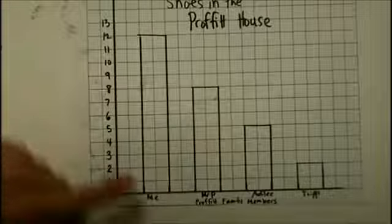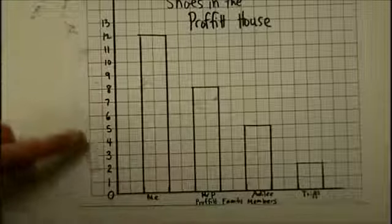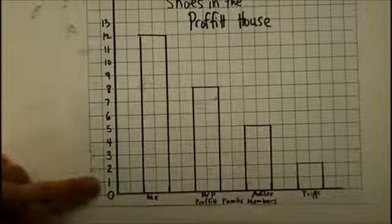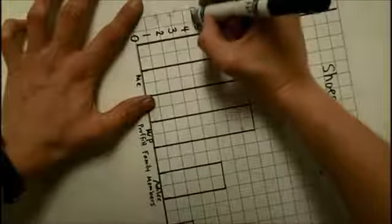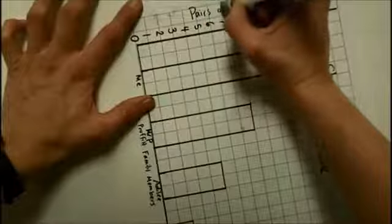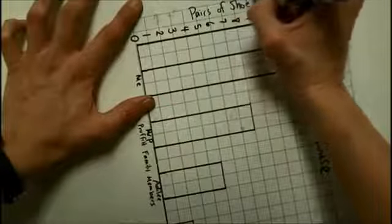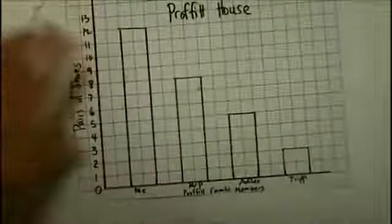And then, I need to make a y-axis scale. I should have saved more room down here, as you can see. Now, I'm going to make a y-axis scale that says what we are counting. Well, we're counting pairs of shoes. So, that's going to go here.